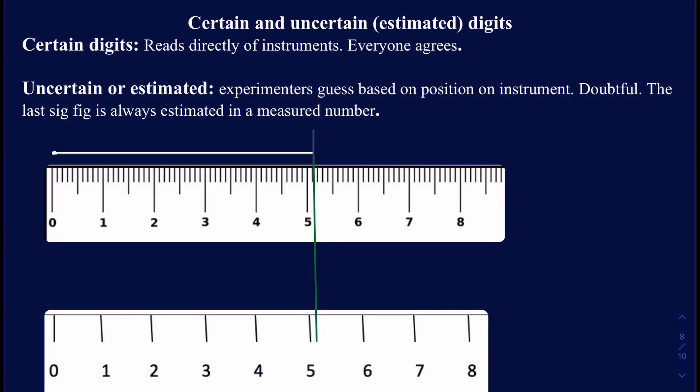In this tutorial, we're going to be learning how to read an instrument, whether it's a metric ruler or a graduated cylinder, and figure out what certain and uncertain digits are in those measured numbers. A certain digit is a reading that directly comes off the instrument — there's usually no doubt about certain digits and everyone agrees about their accuracy. When it comes to uncertain digits, it's more like a guess based on the position of the line, and those are doubtful — most people will have different estimations because they will be looking at the instrument a little differently.